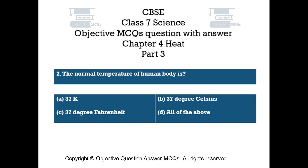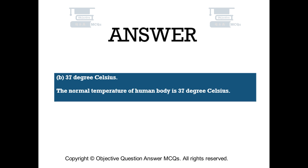Question number 2. The normal temperature of human body is: Option A 37 K, Option B 37 degree Celsius, Option C 37 degree Fahrenheit, Option D All of the above. The right answer is Option B — 37 degree Celsius. The normal temperature of human body is 37 degree Celsius.